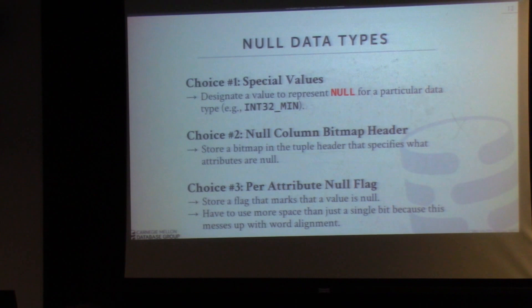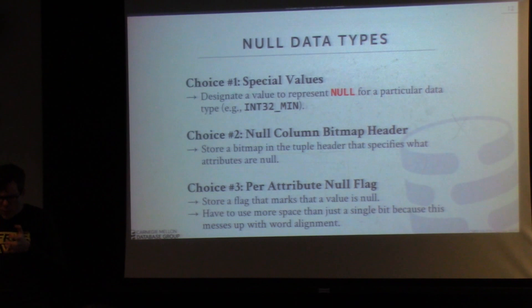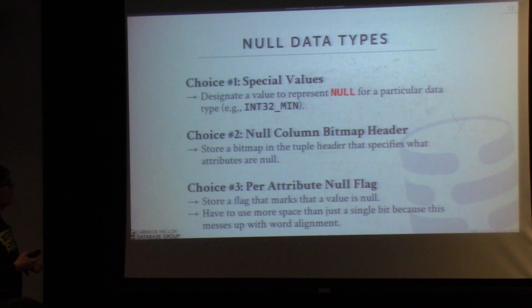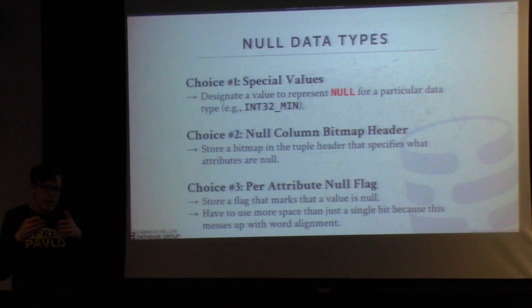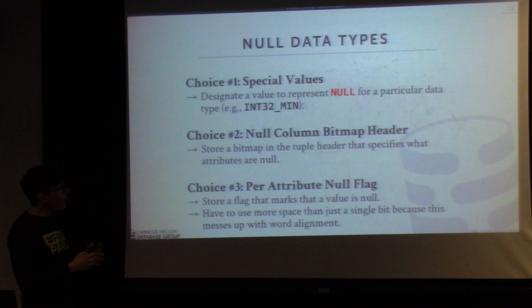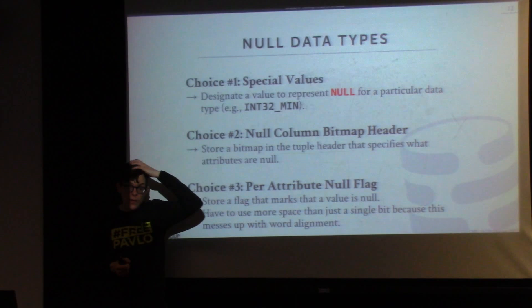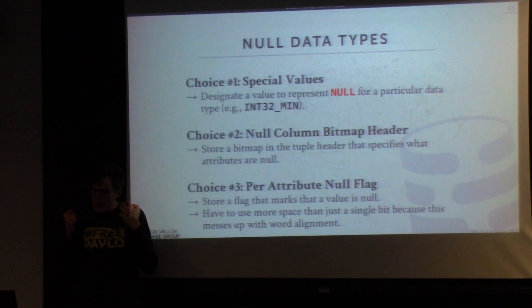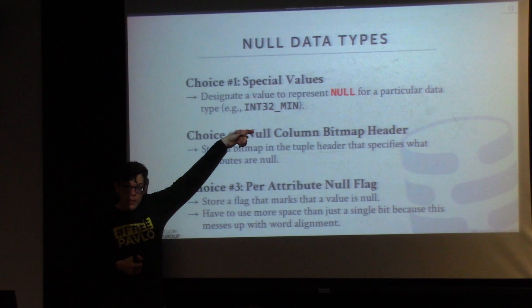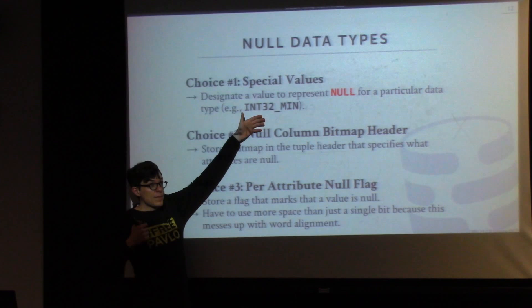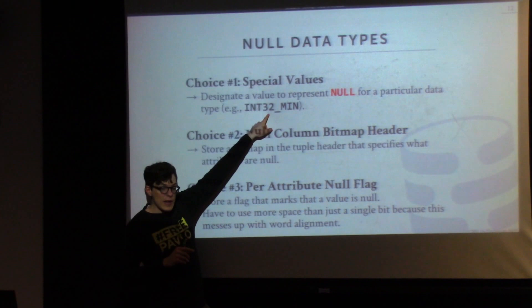Now let's talk about how we represent nulls in our database. There are essentially three ways. The first is to designate a special value in the domain of a value type to represent null for that type. For 32-bit integers, we use INT32_MIN — the lowest value you can store — to represent null. If anyone tries to insert INT32_MIN, we throw an out-of-bounds exception at the upper levels of the system, so the user can't manually store this value. This is what we use in Peloton, following HStore and VoltDB.